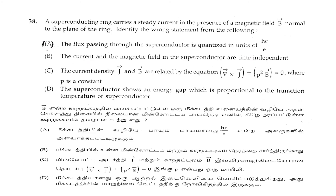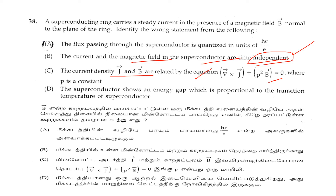The next question: A superconducting ring carries a steady current in the presence of a magnetic field B vector normal to the plane of the ring. Identify the wrong statement from the following. The current and the magnetic field in the superconductor are time dependent — this statement is correct. The current density J and B vector are related by the equation del cross J vector plus T² B vector equals zero, where B is constant — this is also correct.